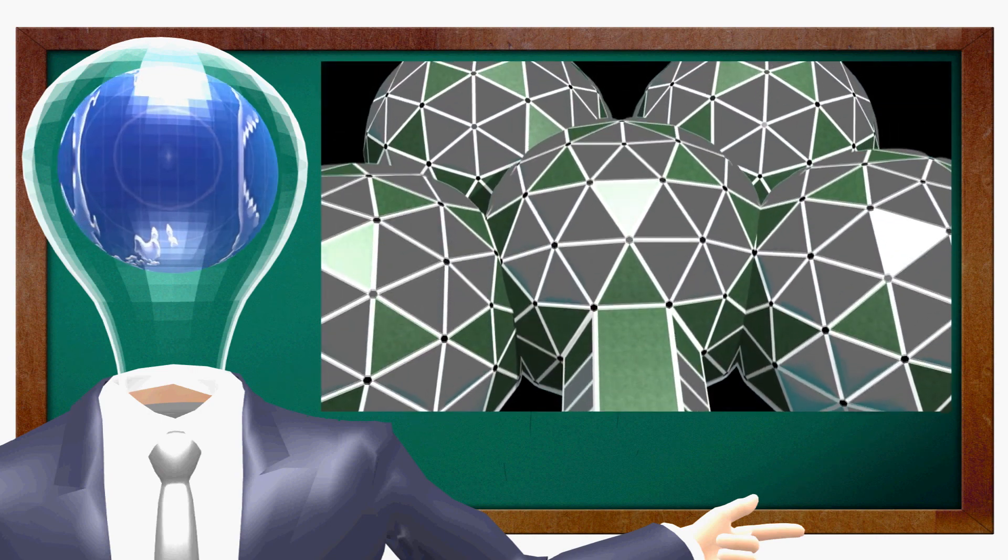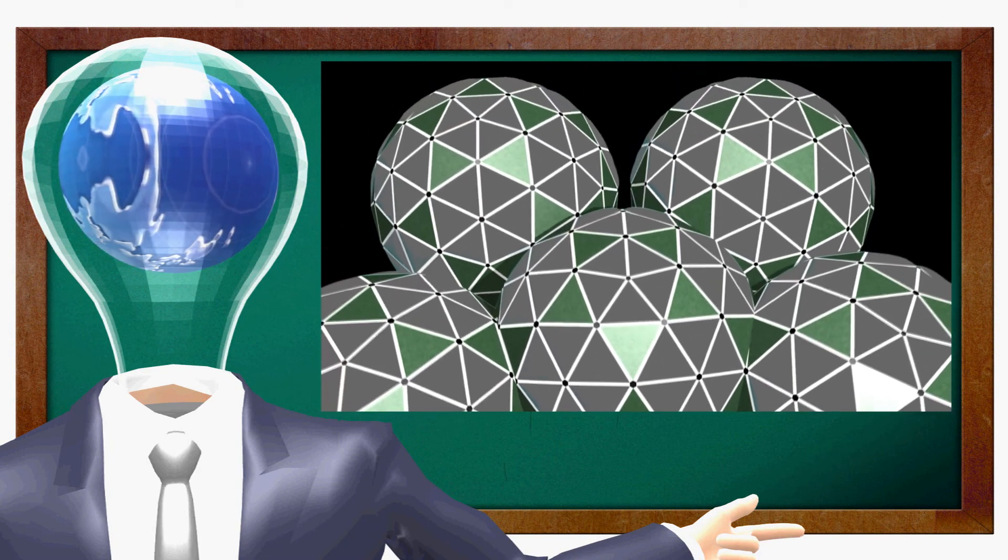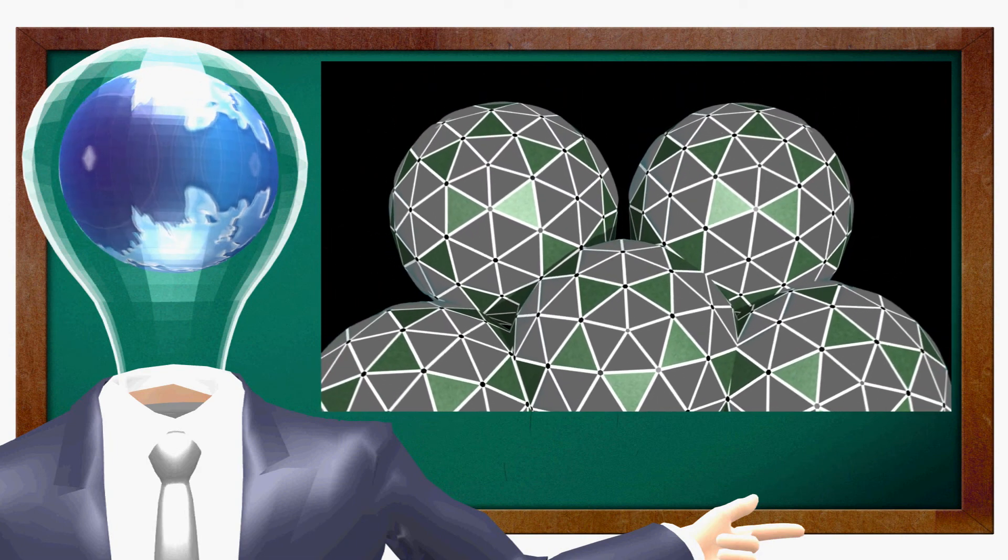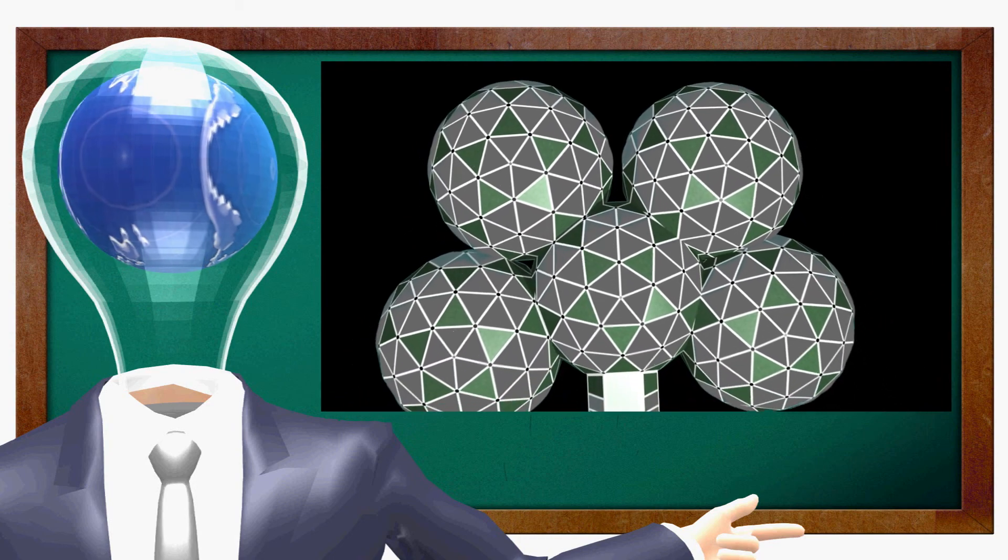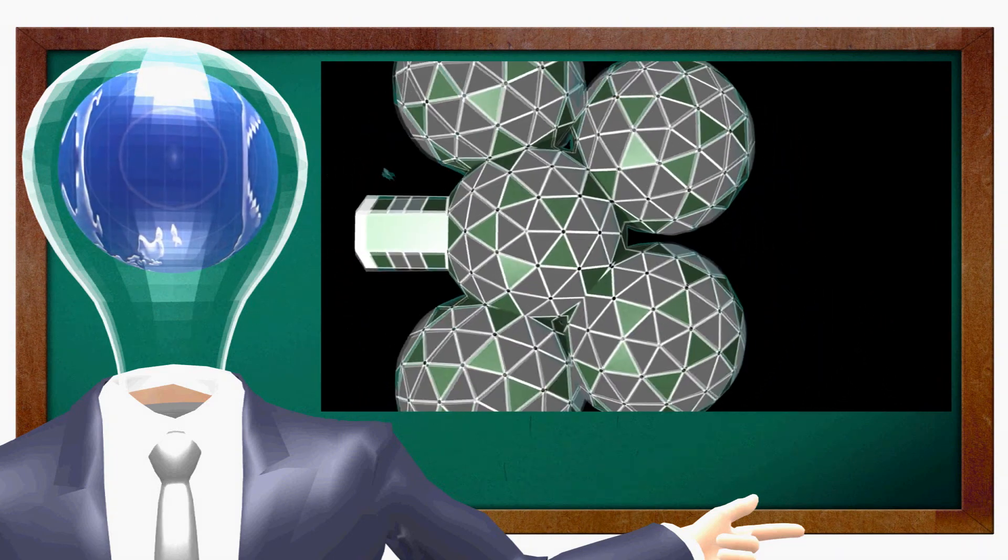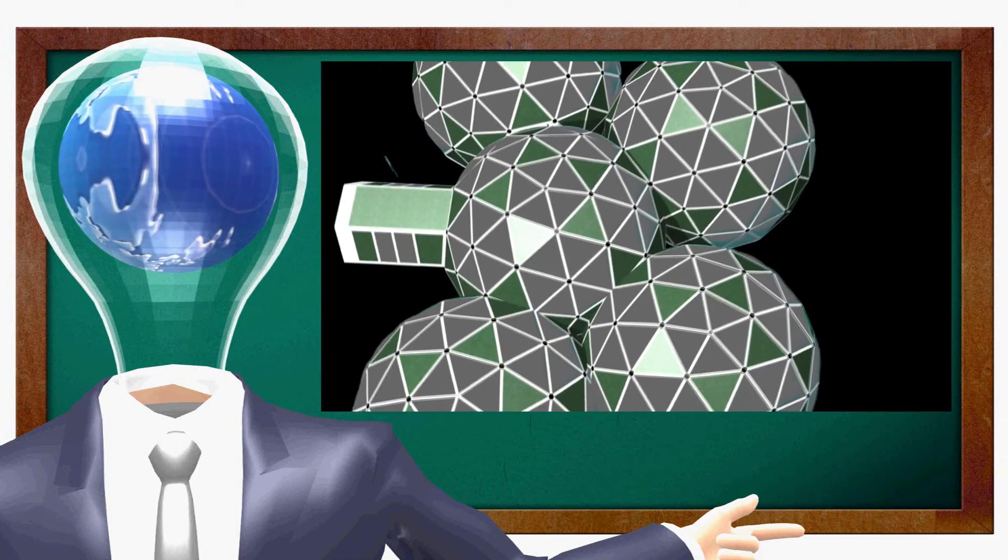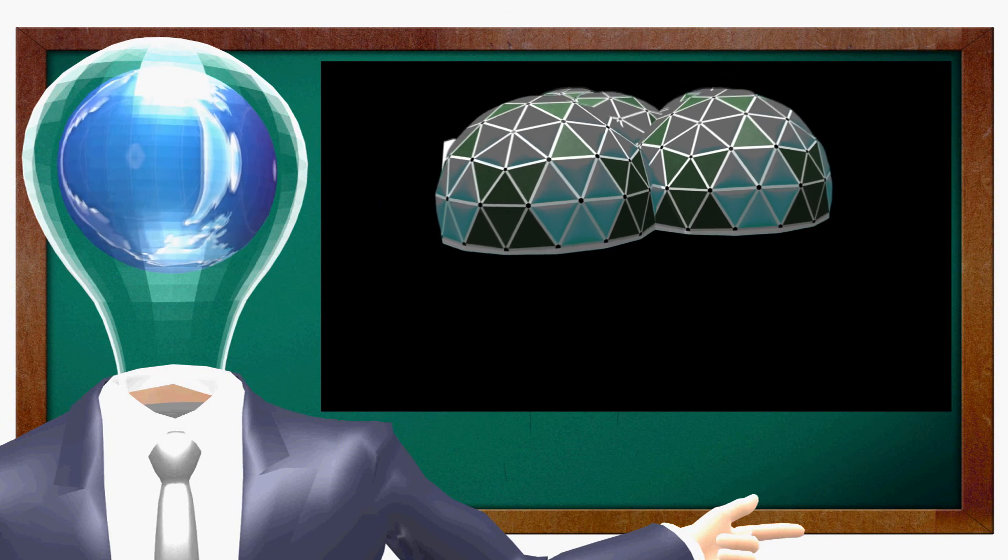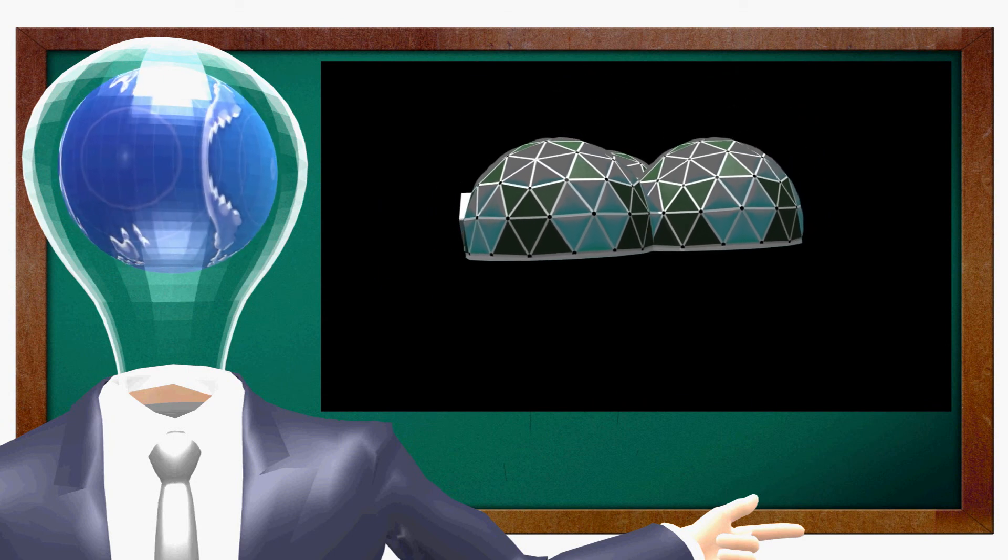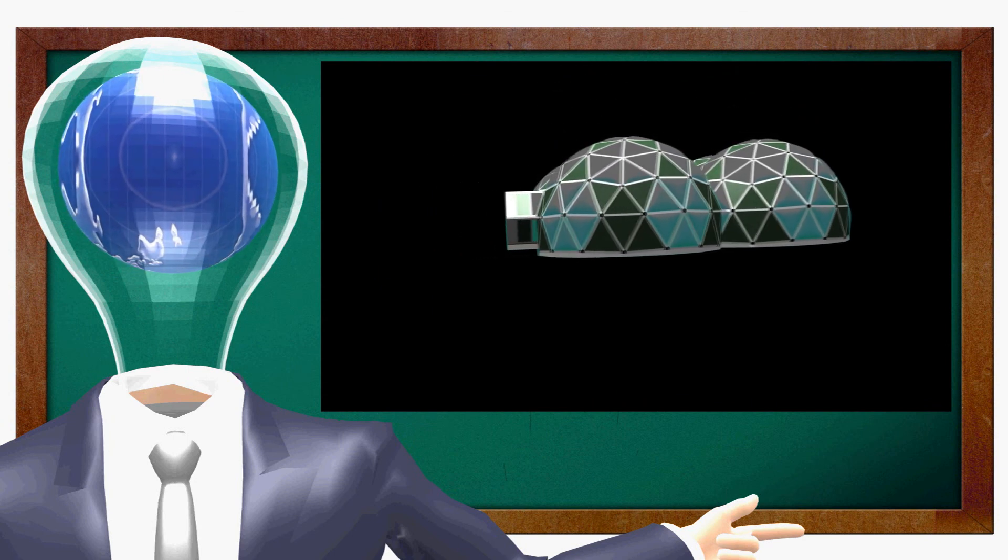When fully operational, this closed environment project will grow 27 species of vegetables, enough green produce to feed 10,000 humans year-round, 365, 24, 7.